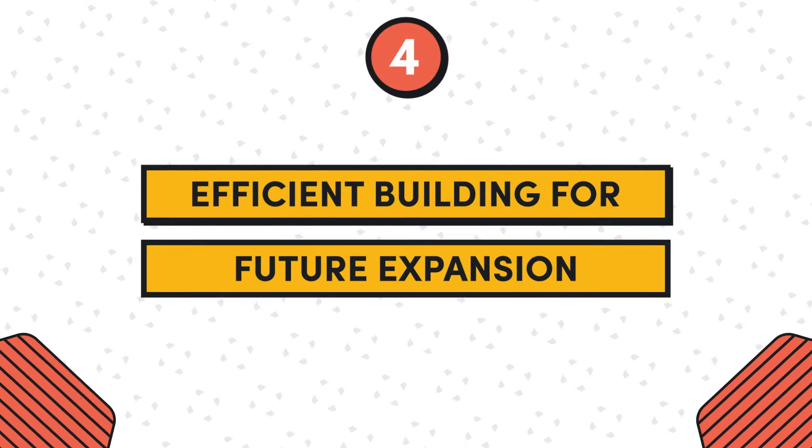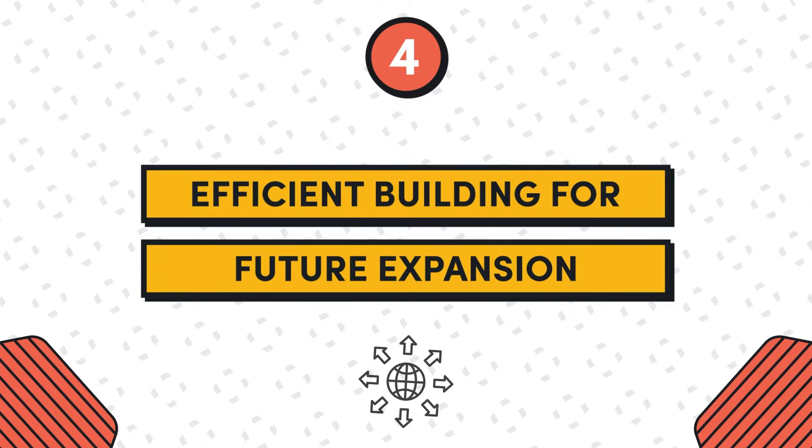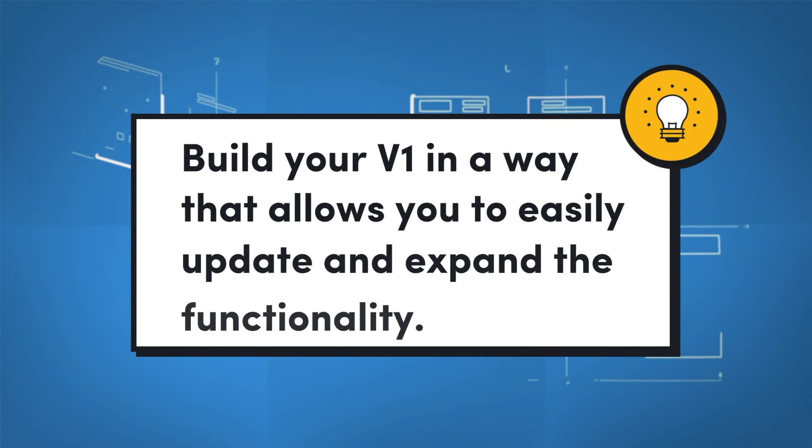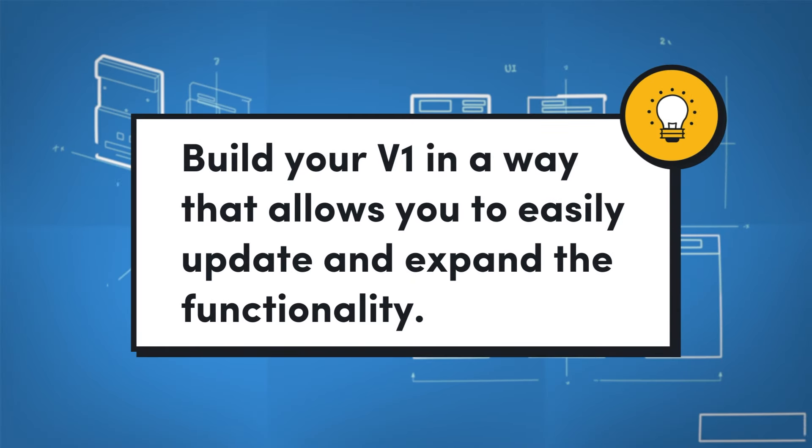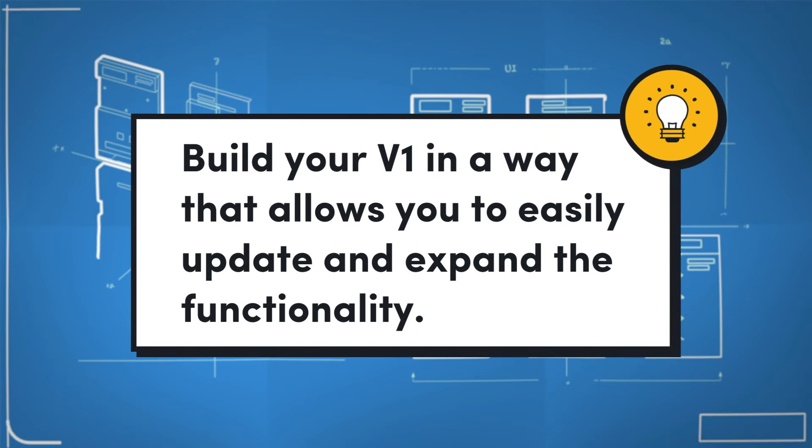Mistake number four: efficient building for future expansion. Building your project in a way where your V1 is already at capacity is a problem. Understand that this is your V1 — it needs a foundation with a lot of room to grow based on user feedback and how you want to change and add to your product. Build it in a way that you can understand, go back to easily, and add on to, because this is just the beginning.